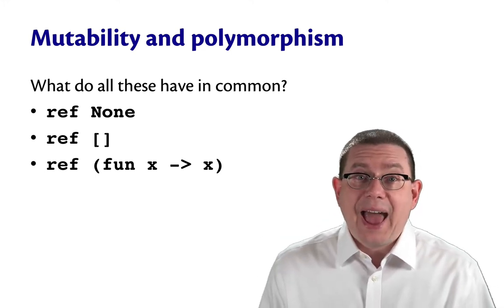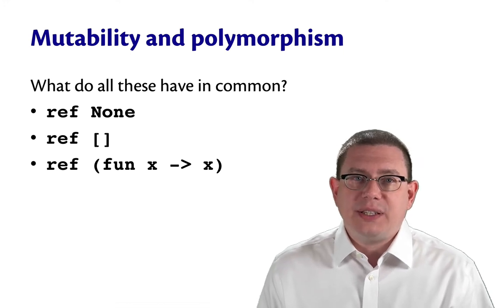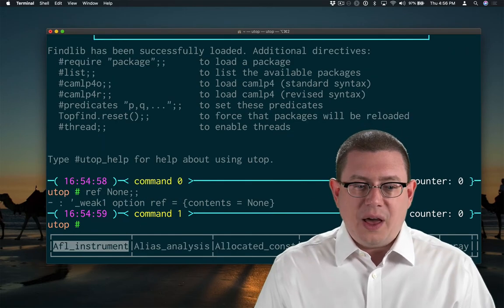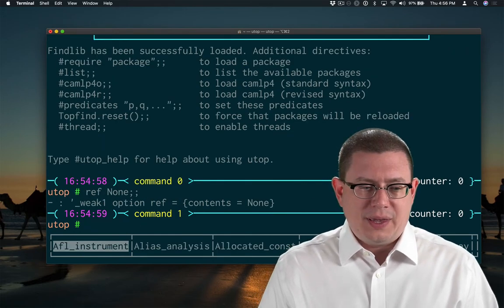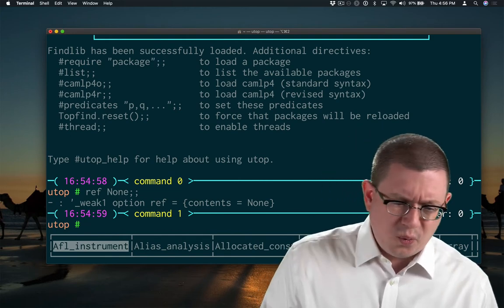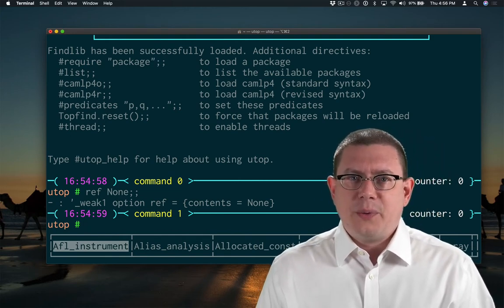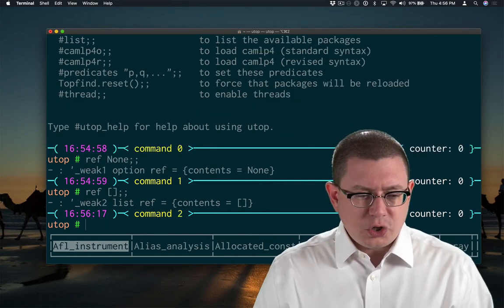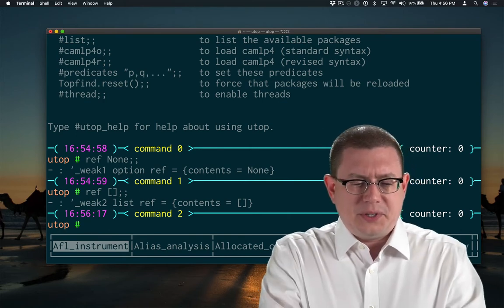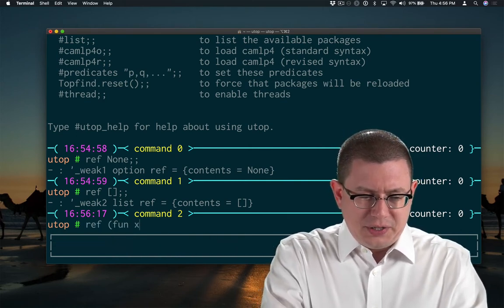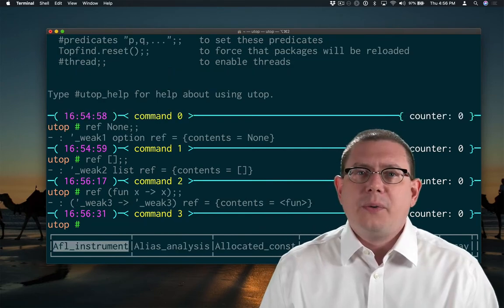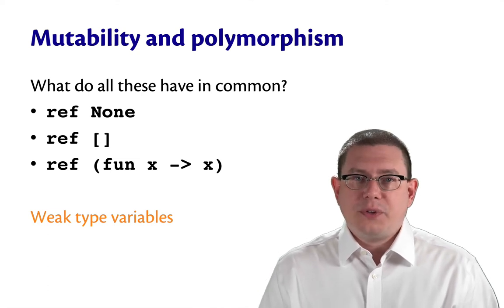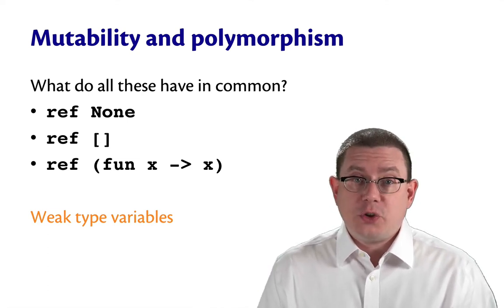But something unexpected happens when we put each of these into utop. So what is ref none? It's not alpha option ref. It's tick underscore weak one option ref. Isn't that weird? What's a ref to the empty list? Tick underscore weak two list ref. What's a ref to the identity function x arrow x? Oh my. So what all these have in common is weak type variables. You saw the word weak showing up inside of each of those type variables.